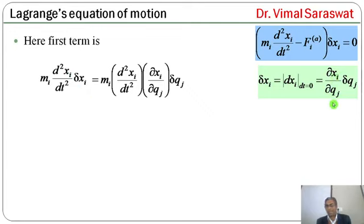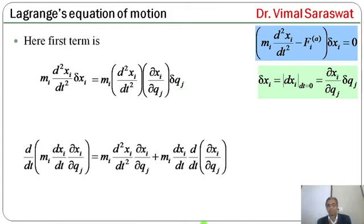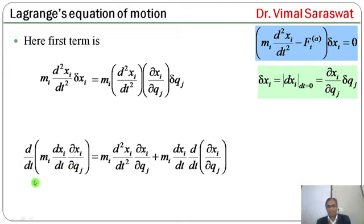Replacing δxi with (∂xi/∂qj) * δqj, the first term becomes: mi * d²xi/dt² * (∂xi/∂qj) * δqj. Now, taking d/dt of (mi * dxi/dt * ∂xi/∂qj) by the product rule: